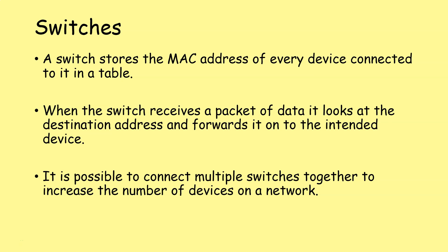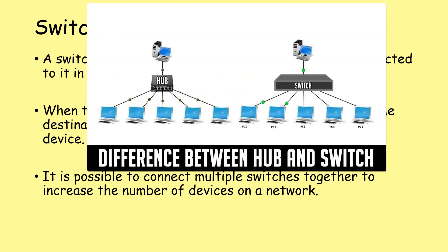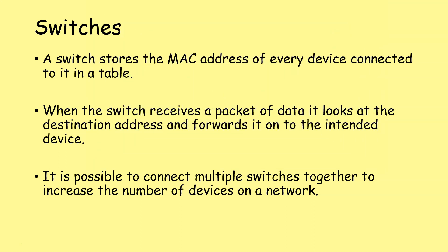It is possible to connect multiple switches together to increase the number of devices on a network. If you're looking at an older textbook or video you might see mention of a similar device called a hub — a hub is like an old-fashioned version of a switch. It links together all the cables on a wired network but is not as intelligent as a switch. A switch only forwards a packet to the one computer that requires it, whereas a hub sends it to every computer on the network. This means a hub is not as secure as a switch.